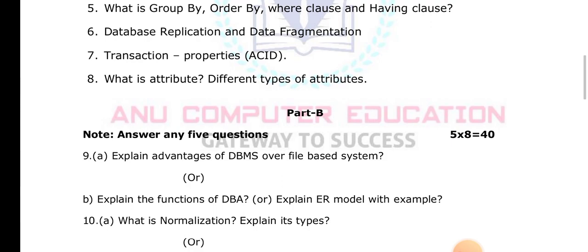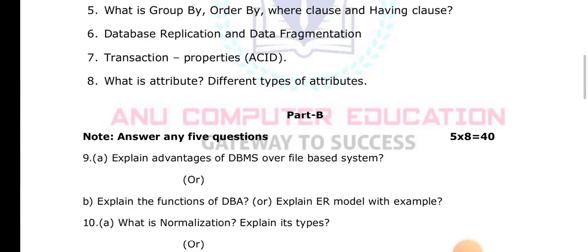What is Third Normal Form (3NF)? A table is in 3NF if and only if it is in 2NF and has no transitive dependency. Transitive dependency means: if X determines Y, Y determines Z, and Z determines X. If any table has a transitive dependency problem, we must break the table (decomposition) to remove it. One non-prime attribute cannot determine another non-prime attribute.